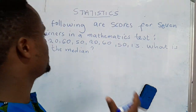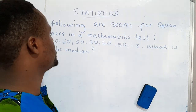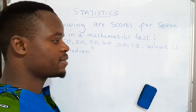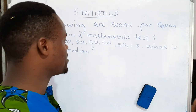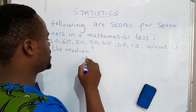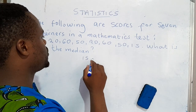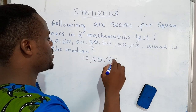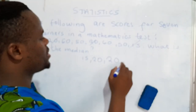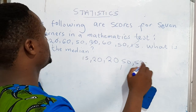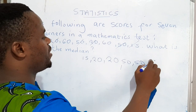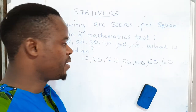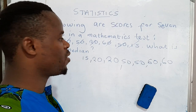Now in a case where you've been given numbers which are not yet arranged, you need to rearrange them hierarchically, starting from the smallest up to the biggest number. So starting from 15, then we have 20, then another 20, then the one which follows is 50, then another 50, then we have a 60 and another 60. And we have actually arranged the numbers hierarchically starting from the smallest to the biggest.